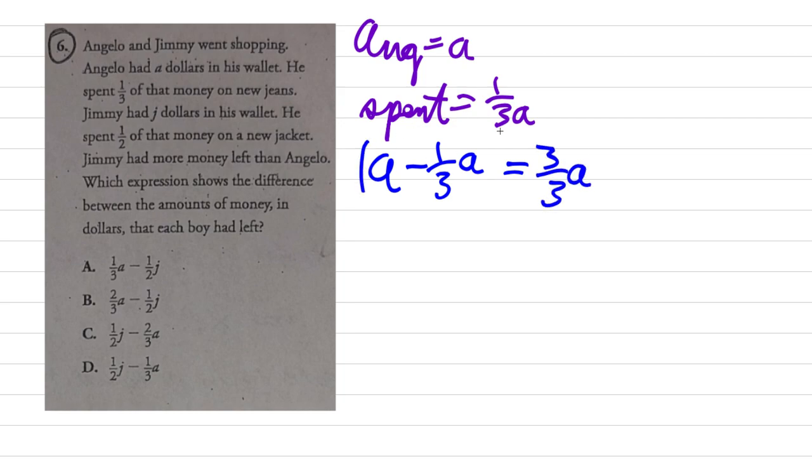So basically it's three-thirds of a because that is what 1a equals - three over three minus one over three a. So Angelo has left two-thirds of a. That's what Angelo has left in his wallet.